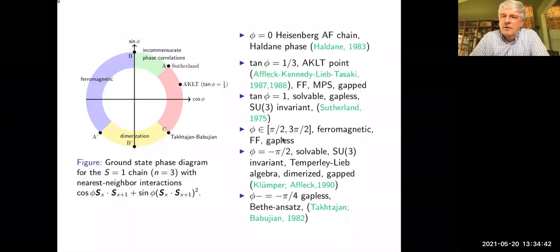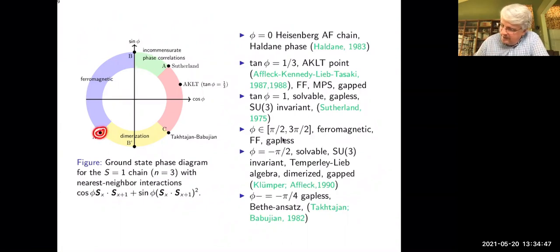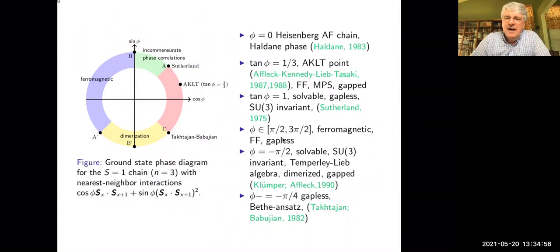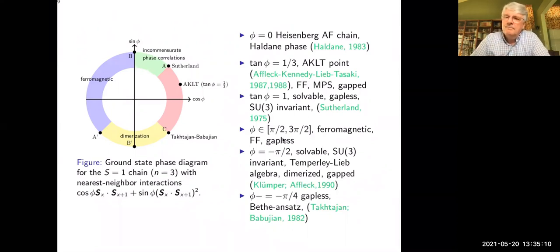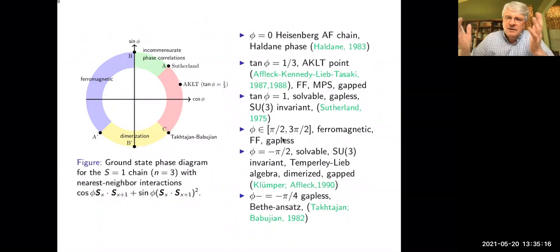Concrete information has been available for quite some time about the points that separate the different phases. They're special by the fact that they separate two different phases — they're typically critical points, and in this case they are associated with exactly solvable quantum spin chains. There are still open questions about them and people continue to study them.